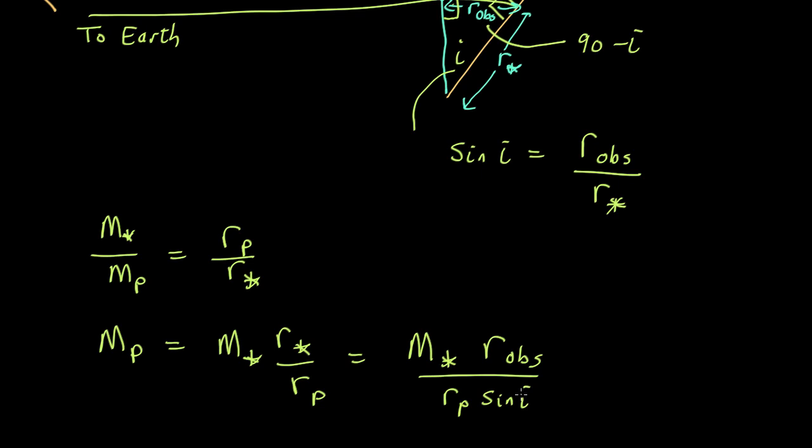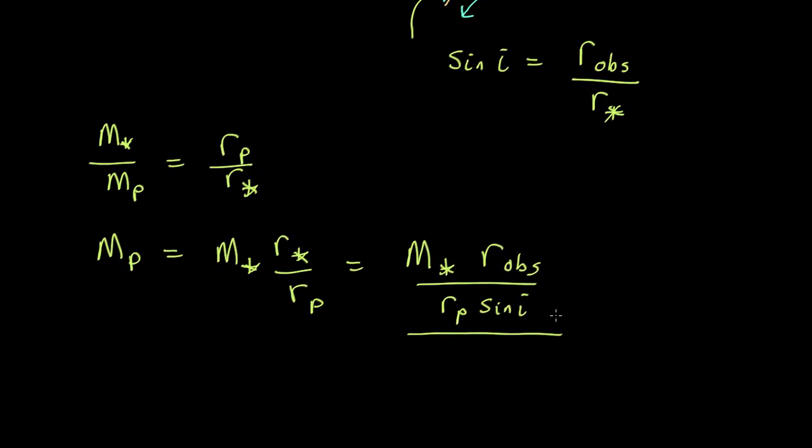And we don't know what the inclination angle is. There's no way to tell it from the pulsar data, typically. This equation is normally rearranged to give us that M planet sine I equals M star R observed over R planet.